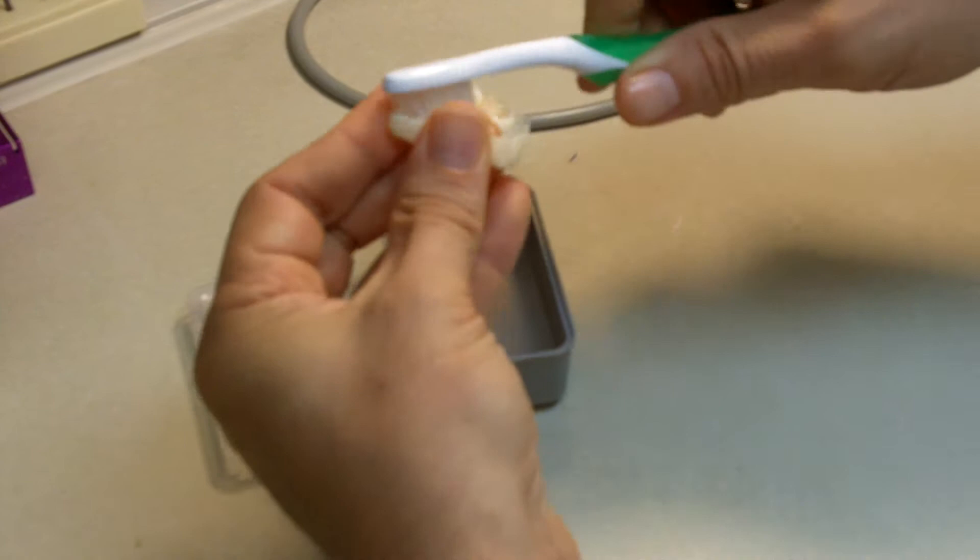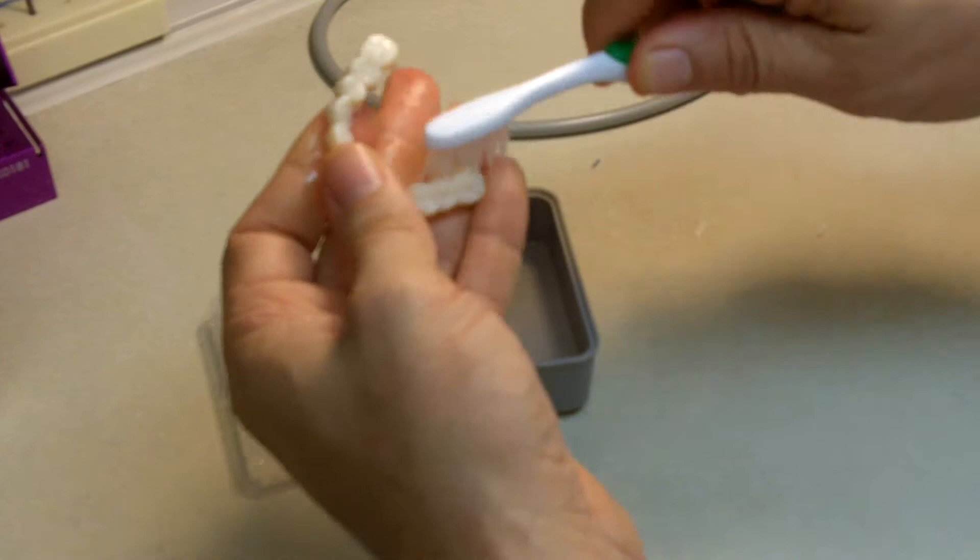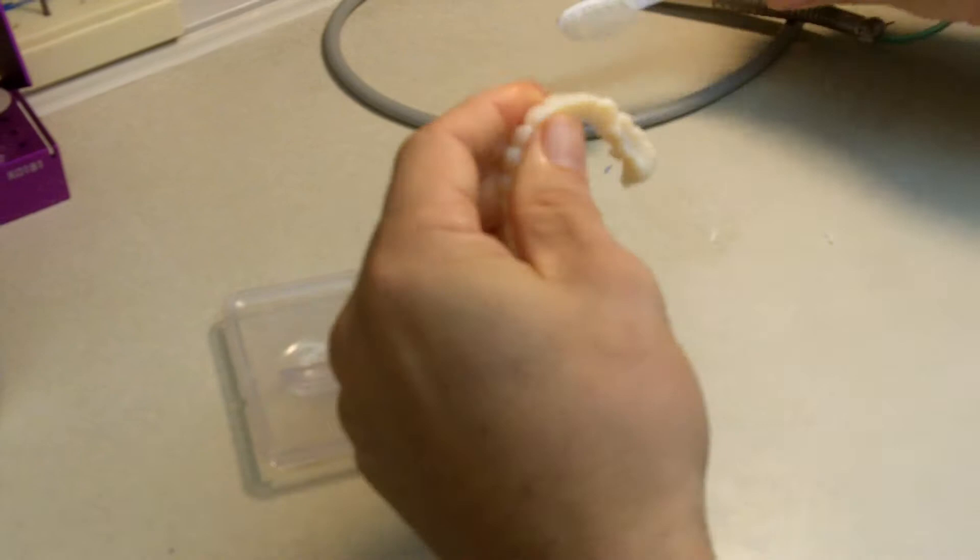The purpose of this is to remove the oxygen-inhibited layer on the provisional so that as I adjust it, I'm not dealing with that gunk on the outside that gets all up in your burrs. Now I'm going to dry this.